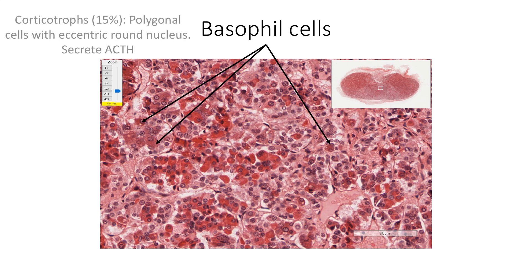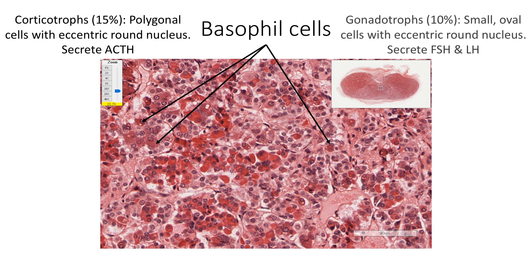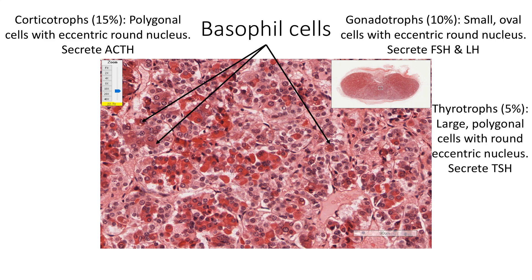Corticotrophs are polygonal, medium-sized basophil cells with an eccentric round nucleus. Gonadotrophs are small, oval basophilic cells with an eccentric round nucleus. Thyrotrophs are the least in number, forming only about 5% of the population, but they are large polygonal basophilic cells with an eccentric nucleus.